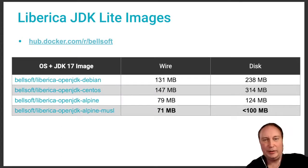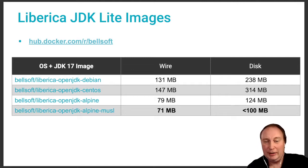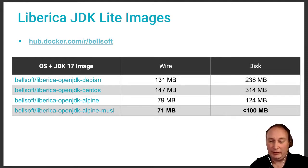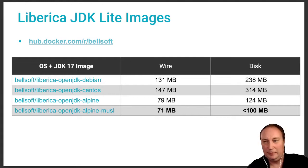This allows all OpenJDK vendors to release extremely small container base images with JDK. Here you can see Liberica images based on different operating systems. Using the smallest one — Alpine Linux — the transfer size over the wire is about 70 megabytes only, allowing us to quickly start new instances when scaling in a cloud with an elastic approach.